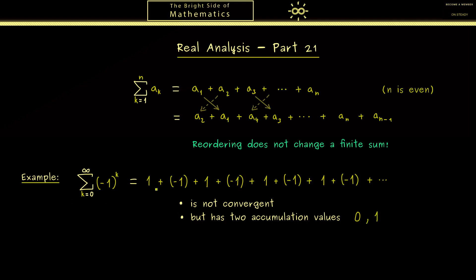This is indeed easy to see. We start with 1, then add minus 1, so we are at 0. Then add 1 again, then 0 again. So we alternate between both values here. Now what we will do is reorder the series and we will get different accumulation values.